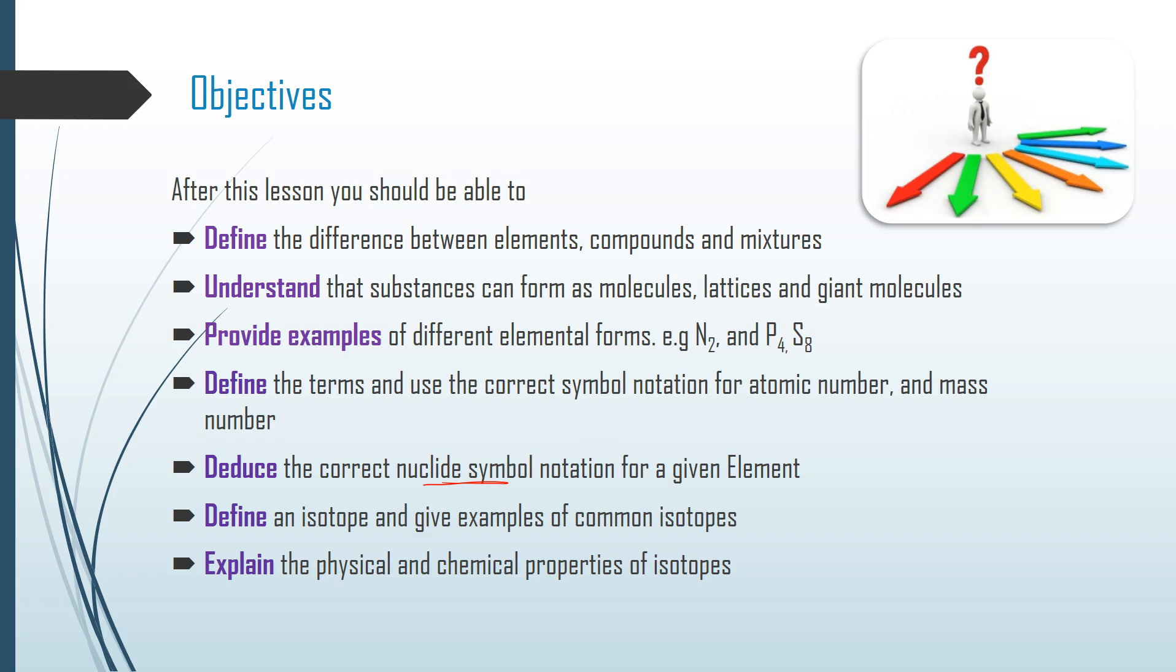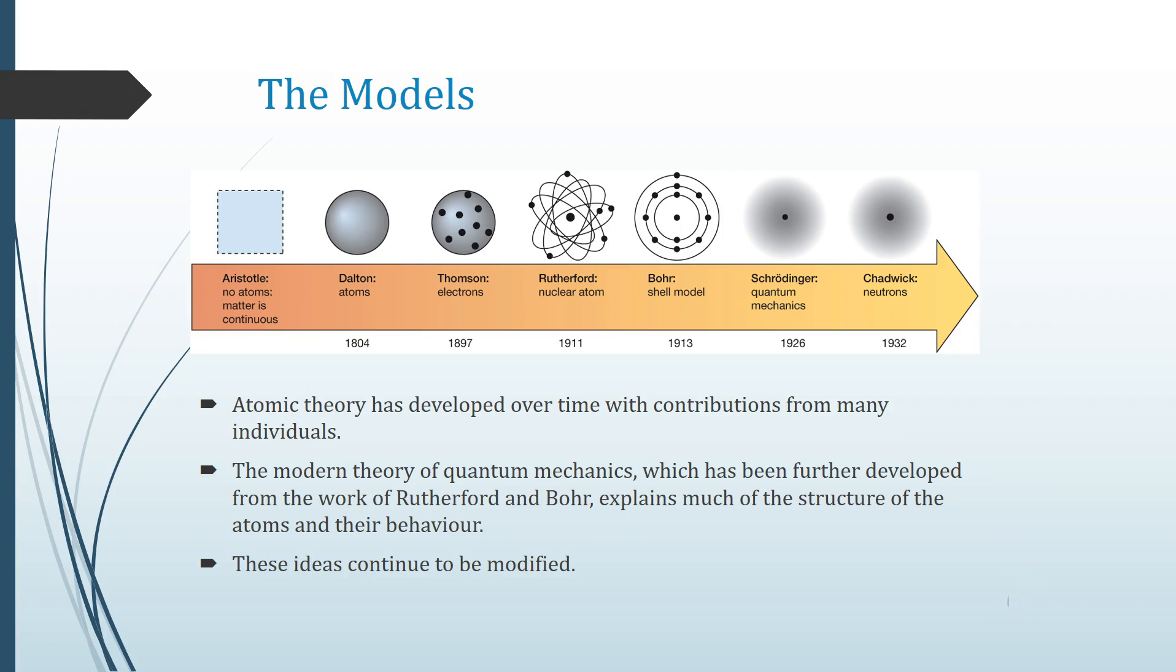Deduce the correct nuclide symbol notation, a nuclide symbol being our standard atomic symbol notation for any given element. Be able to define the terms isotopes and give examples of common isotopes, and then explain the physical and chemical properties of isotopes and how they are similar or different to their component atoms.